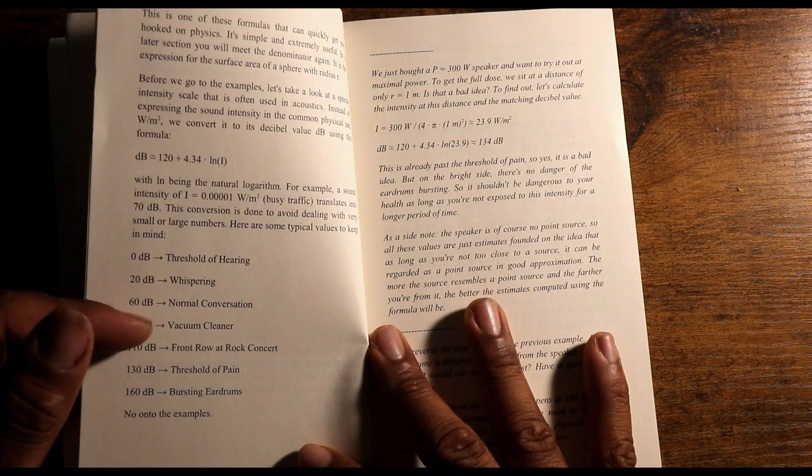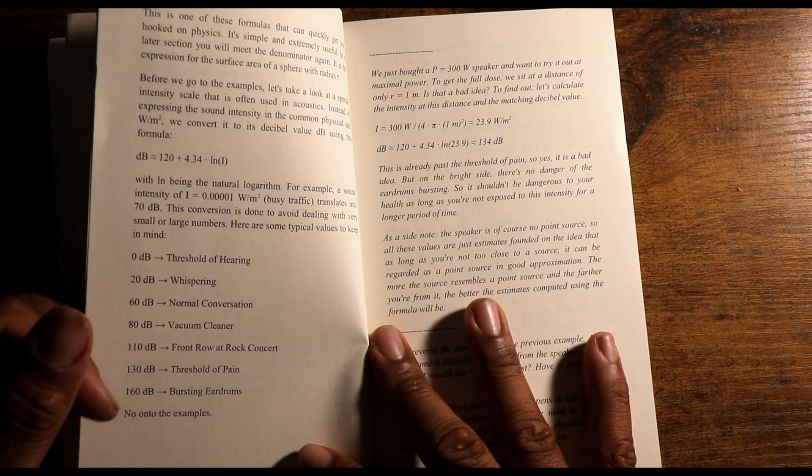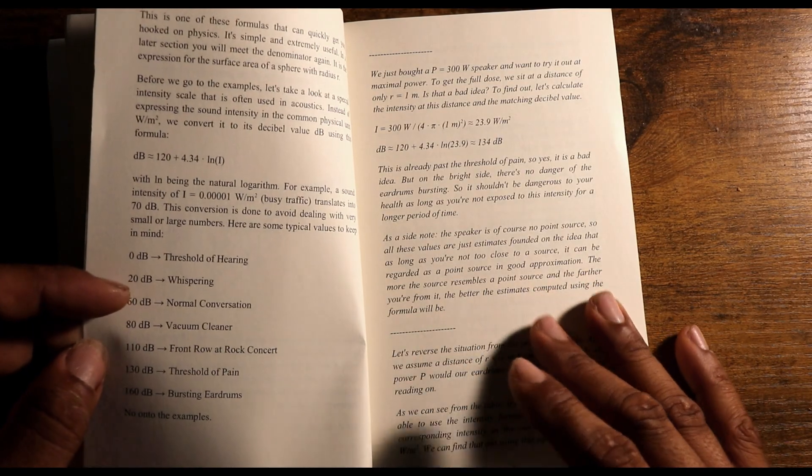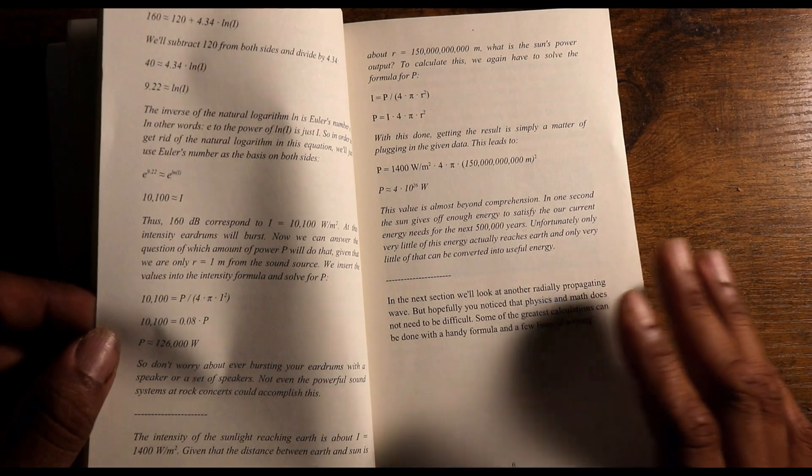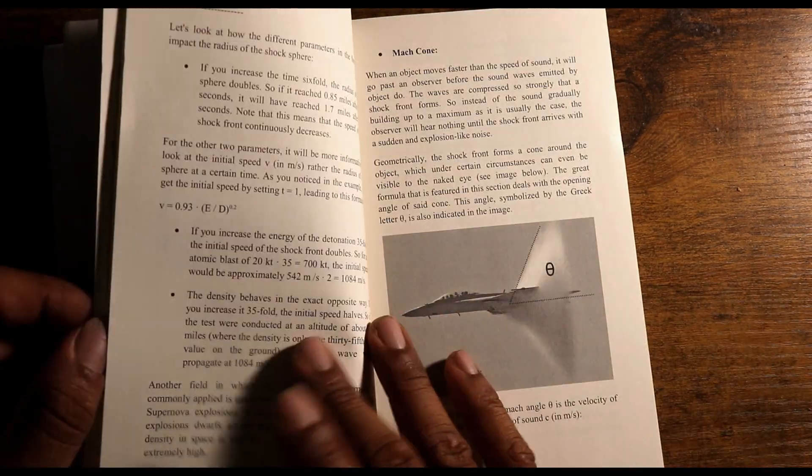So, whisperings, 20 dB. Normal conversation, 60 dB. Of course, these things fluctuate, but interesting to have it scaled like that. Explosions.